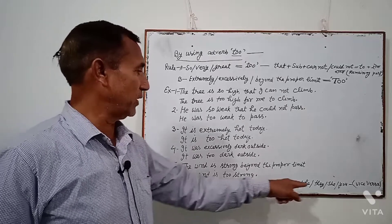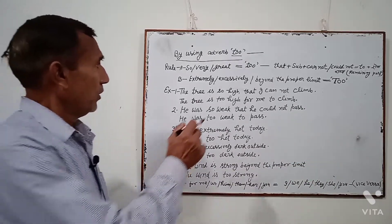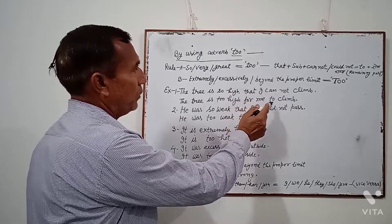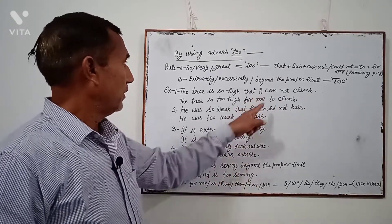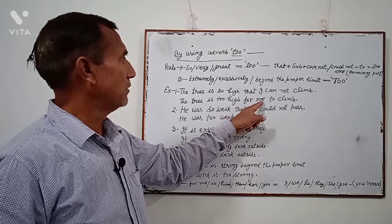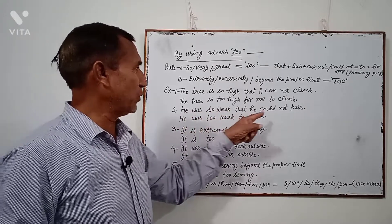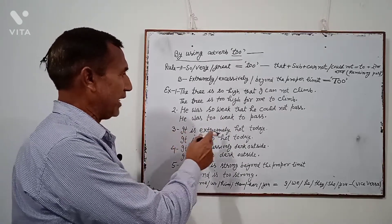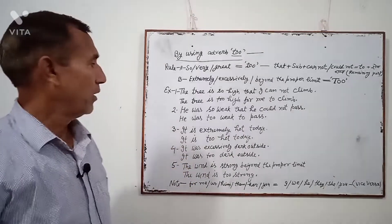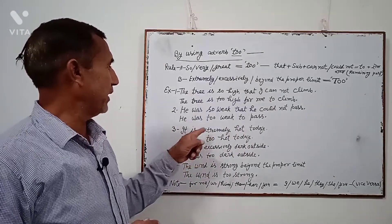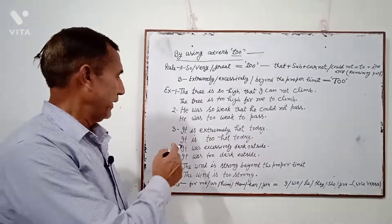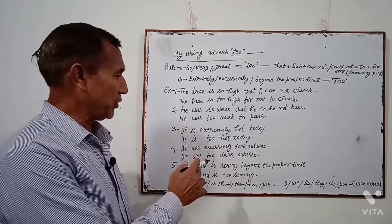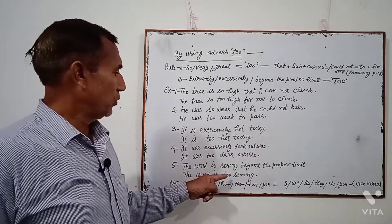For 'them', change into 'they', and so on. Now practice examples: 'The tree is too high for me to climb.' Here 'I' changes to 'for me'. 'He was so weak that he could not pass' → 'He was too weak to pass.' 'It is extremely hot today' → 'It is too hot today.' 'It was excessively dark outside' → 'It was too dark outside.' 'The wind is strong beyond the proper limit' → 'The wind is too strong.'